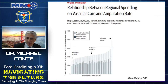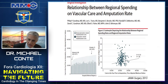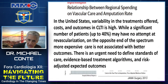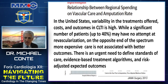In the United States, there's a tremendous variance in the aggressiveness of vascular care and the cost of treating patients with CLTI as well as amputation in different regions of the country. The relationship between cost and successful outcome in terms of preventing amputation is not direct — costs in the year prior to amputation were actually higher in those areas that had higher amputation rates. As many as 40% of patients may have no attempt at revascularization at all, while more expensive vascular care has not been associated with better outcomes. Thus, there's an urgent need to define standards of care, evidence-based treatment algorithms, and risk-adjusted expected outcomes.